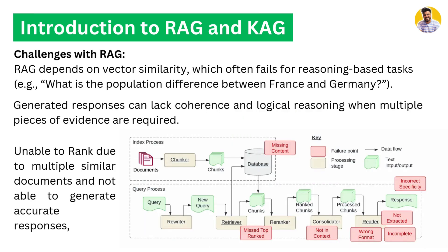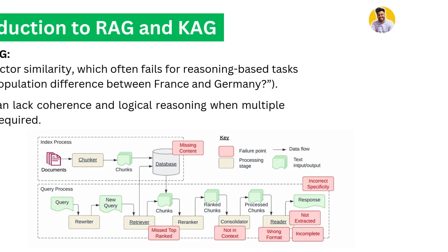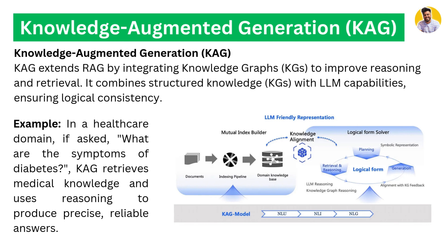There are some challenges with RAG because it depends on vector similarity, which often fails in reasoning-based or problem-solving tasks. For example, asking what is the difference between France and Germany — it lacks coherence and reasoning because multiple pieces of evidence are required. Short context will not always work, leading to issues like missing context, irrelevant context, and poor ranking.